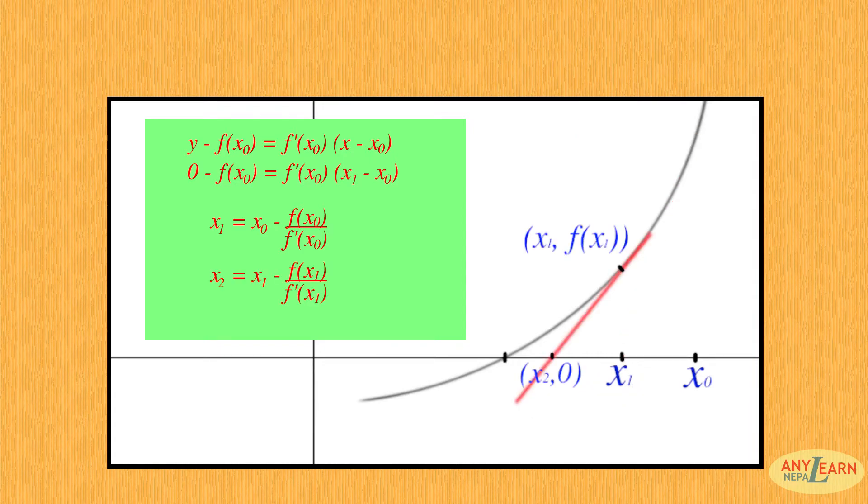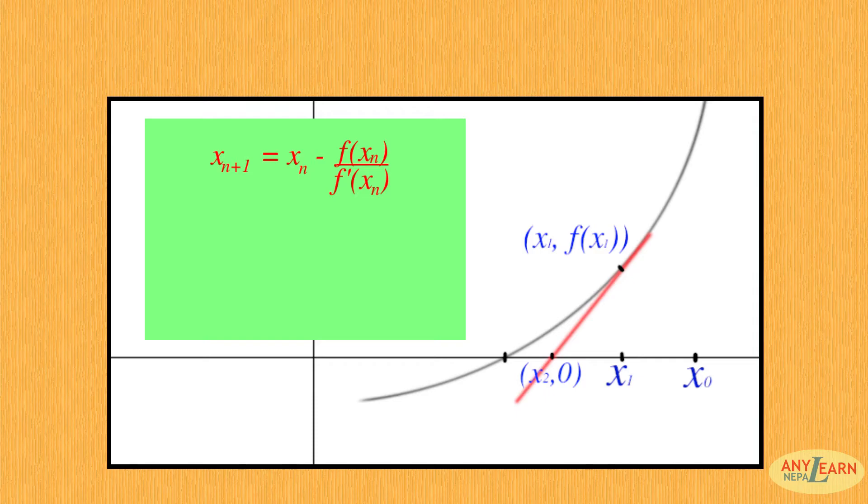Then we can write x2 equals x1 minus f(x1) by f'(x1). And on generalizing, x(n+1) equals xn minus f(xn) by f'(xn), or x(i+1) equals xi minus f(xi) by f'(xi). On different values of n or xi, we get different values of x.